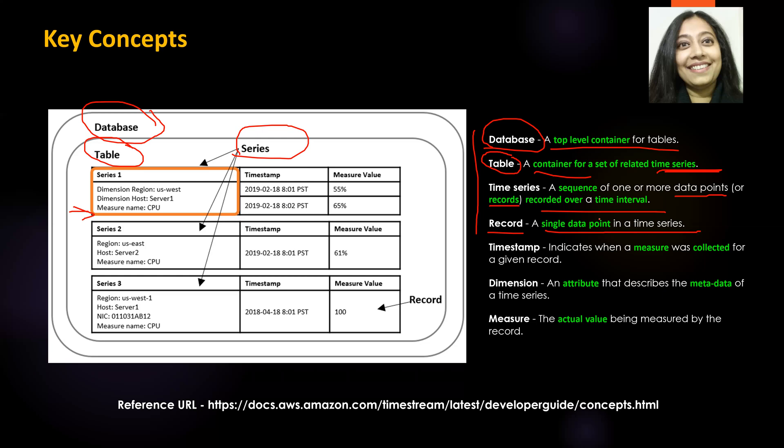So it's as simple as that. You have database at the top level, in that you have a table, in that you have your time series, and in that you have a single record. It's just like any other database — you have a database, your table, a record set or data set, and then a single record inside. Here it's called a time series because it's a set of records recorded over an interval of time. Time is the essence, meaning every record has a timestamp.